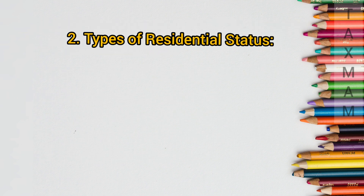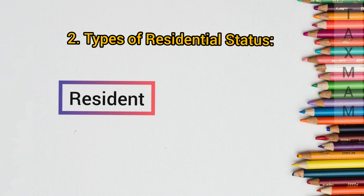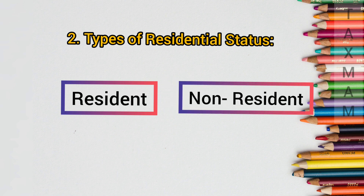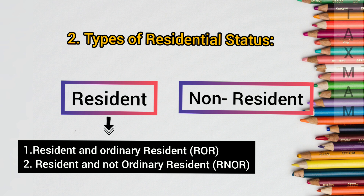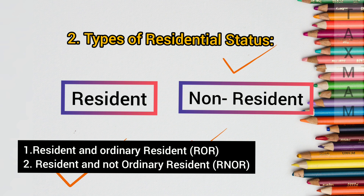Now coming to the second point: how many types of residential status are there? The residential status is divided into two different categories — resident and non-resident. This resident category is again divided into two: Resident and Ordinarily Resident (ROR) and Resident but Not Ordinarily Resident (RNOR). To determine whether the person is a resident or non-resident, we have some basic conditions.